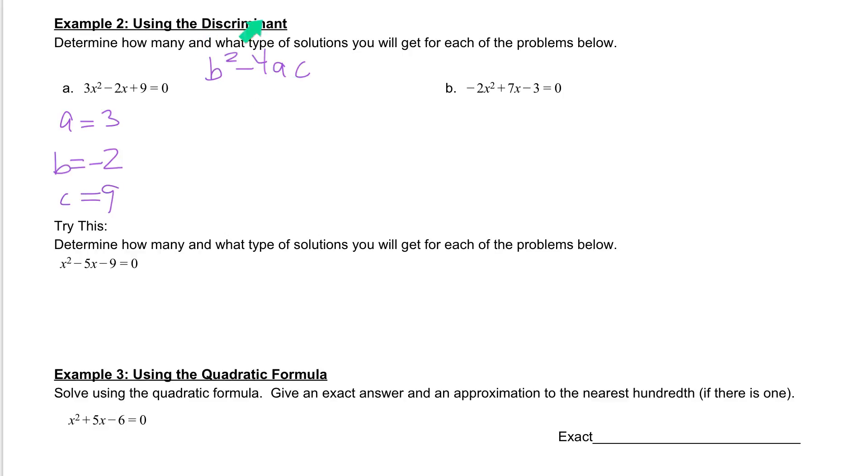Then what we are going to do is plug it into this formula. So we are going to take b squared. Now, b is a negative 2. It must be in parentheses before you square it. So b squared minus 4 times our a value. Remember a is 3 times our c value, which is 9.